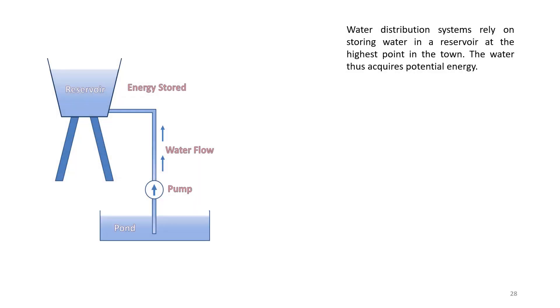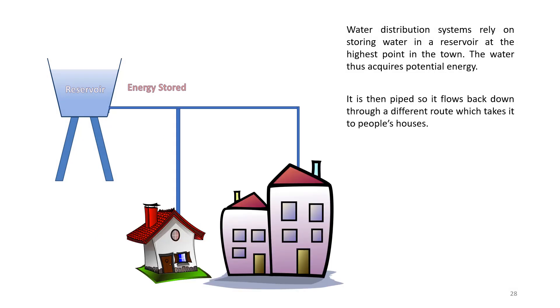In the analogy that we looked at for the water distribution system, where water is piped down from the reservoir to people's houses, it is important to define the flow rate of the water. Similarly, it is important to define the rate of flow of charge in an electric circuit, and this is termed the electric current.